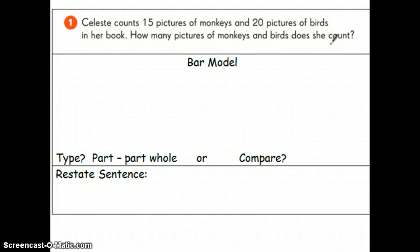The first thing I'm going to ask myself is this a part-part-whole bar model or a compare problem? This is a part-part-whole so I'm going to circle this and start setting up my bar model. I'm going to look back into the word problem and she has 15 pictures of monkeys. I'm going to draw a rectangle to represent 15 pictures of monkeys and I'm going to put 15 in that rectangle.